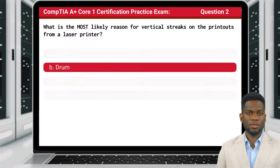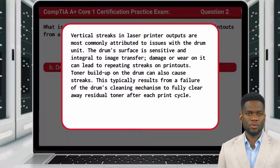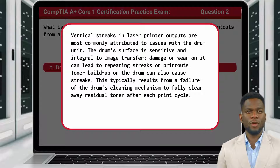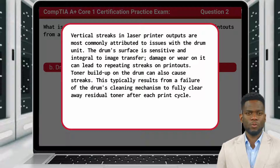The answer is B, the damaged drum unit. Vertical streaks in laser printer outputs are most commonly attributed to issues with the drum unit. The drum's surface is sensitive and integral to image transfer. Damage or wear on it can lead to repeating streaks on printouts. Toner buildup on the drum can also cause streaks, typically resulting from a failure of the drum's cleaning mechanism to fully clear away residual toner after each print cycle.